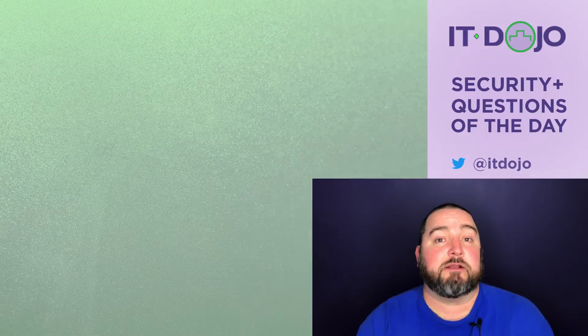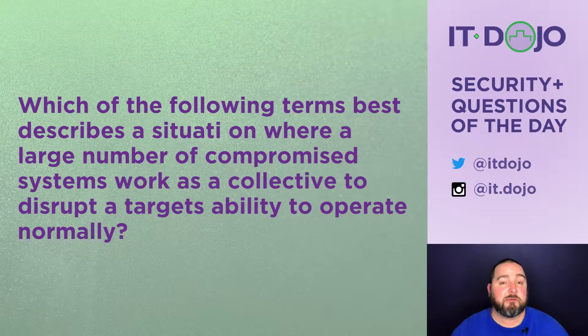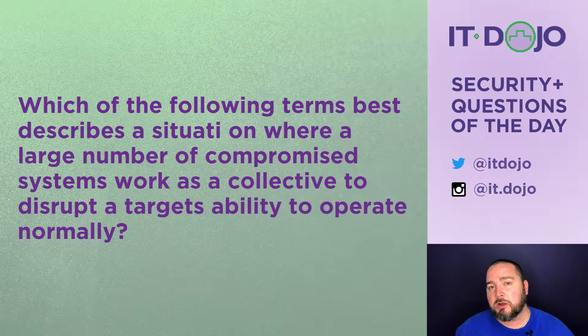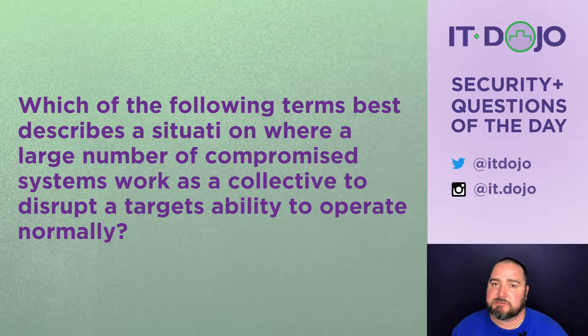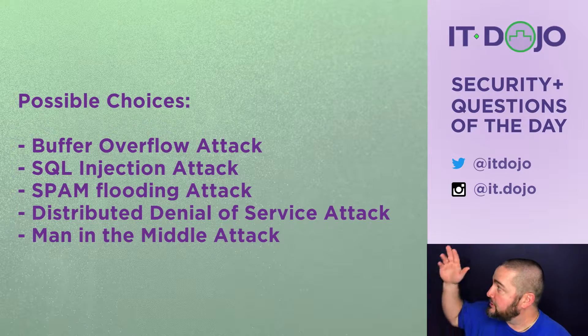Hey, what's going on, Security Plus preppers? This is IT Dojo Security Plus Questions of the Day. I am Colin Weaver, and each day I'm going to give you two practice questions for you to ponder and think about. Here comes question number one: which of the following terms best describes a situation where you have a large number of systems — typically compromised systems — working together as a collective in order to disrupt a system's ability to perform operations normally?